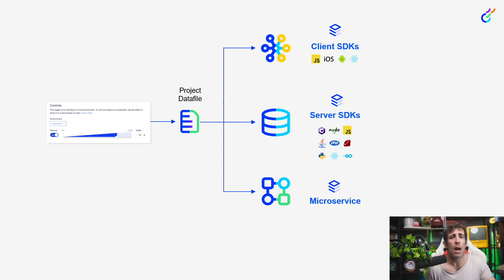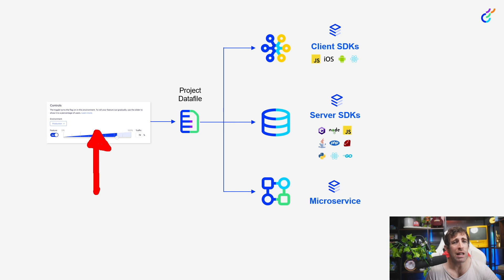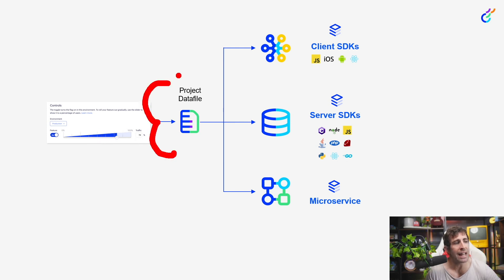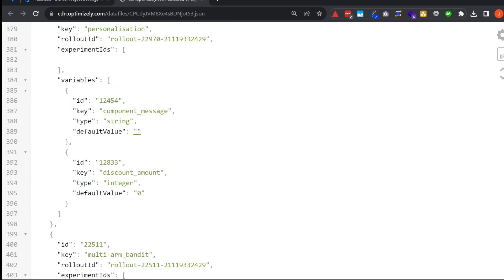With the SDK installed, before you write a feature flag it's important to understand how flags are updated. In the Optimizely UI you create your feature flag, create variables, and update things. Whenever anyone updates something in the UI, a file called the data file gets generated or updated. The data file is the brains of the operation — it contains all experiments, feature flags, personalization groups, and everything the SDK needs. As long as the SDK has a copy of the data file, it doesn't need to talk to Optimizely at all.